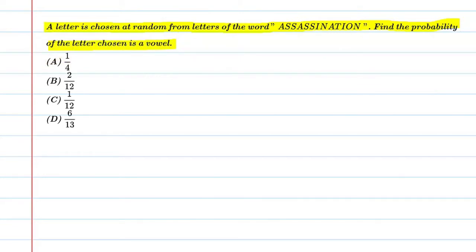Alright, so students, this question has been said that a letter is chosen by this word and that word is assassination. We have asked what the probability is. So first of all, let's write our given word and count the total number of alphabets.